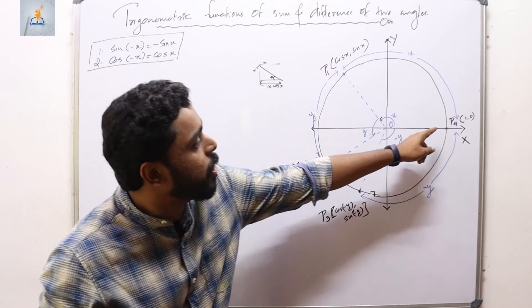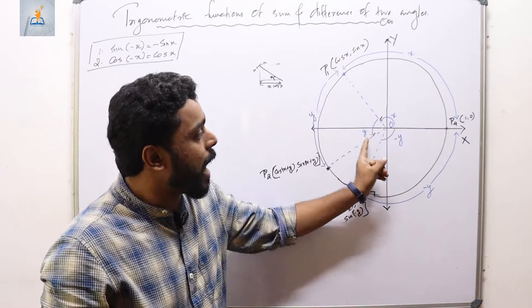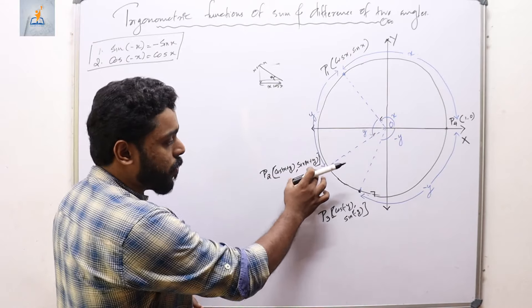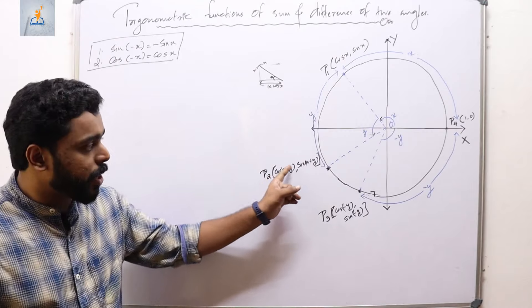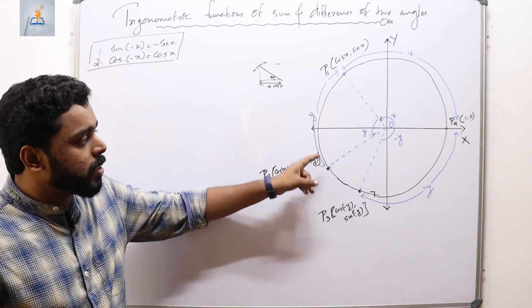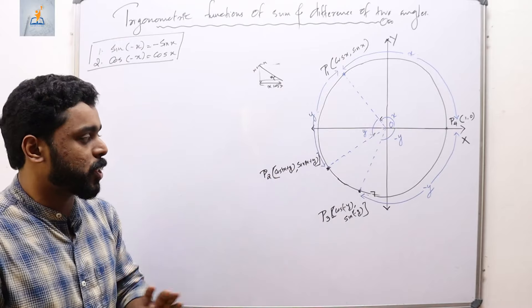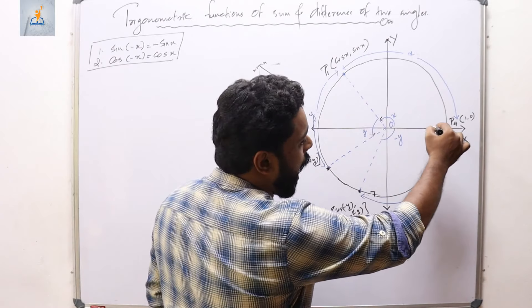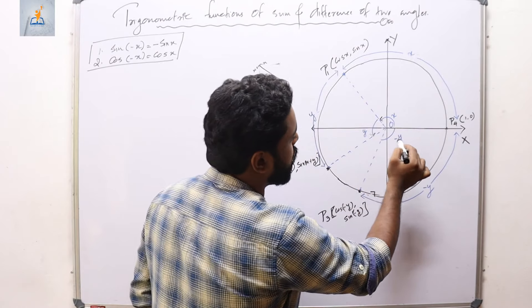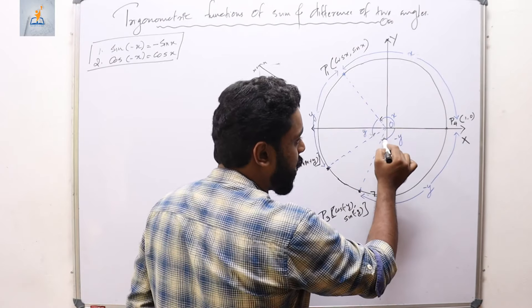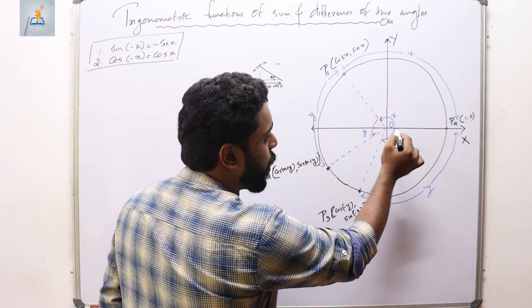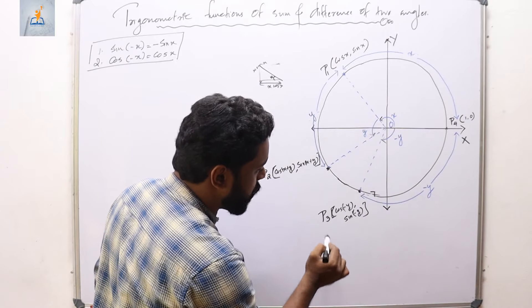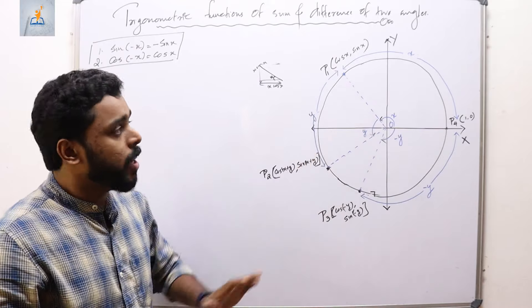Coming to point P2, the entire arc length is x+y, so the coordinates are (cos(x+y), sin(x+y)). Now let me mark point P3 such that the angle is measured in the clockwise direction, so the angle is −y radians. The corresponding coordinates of P3 are (cos(−y), sin(−y)).